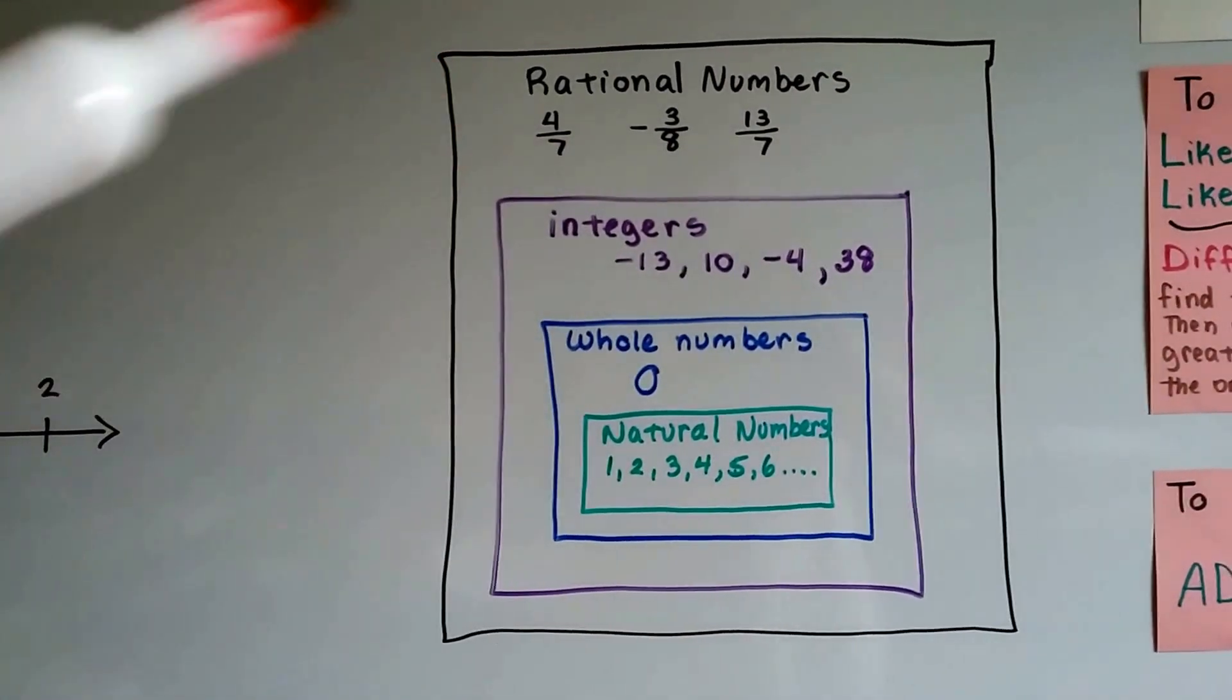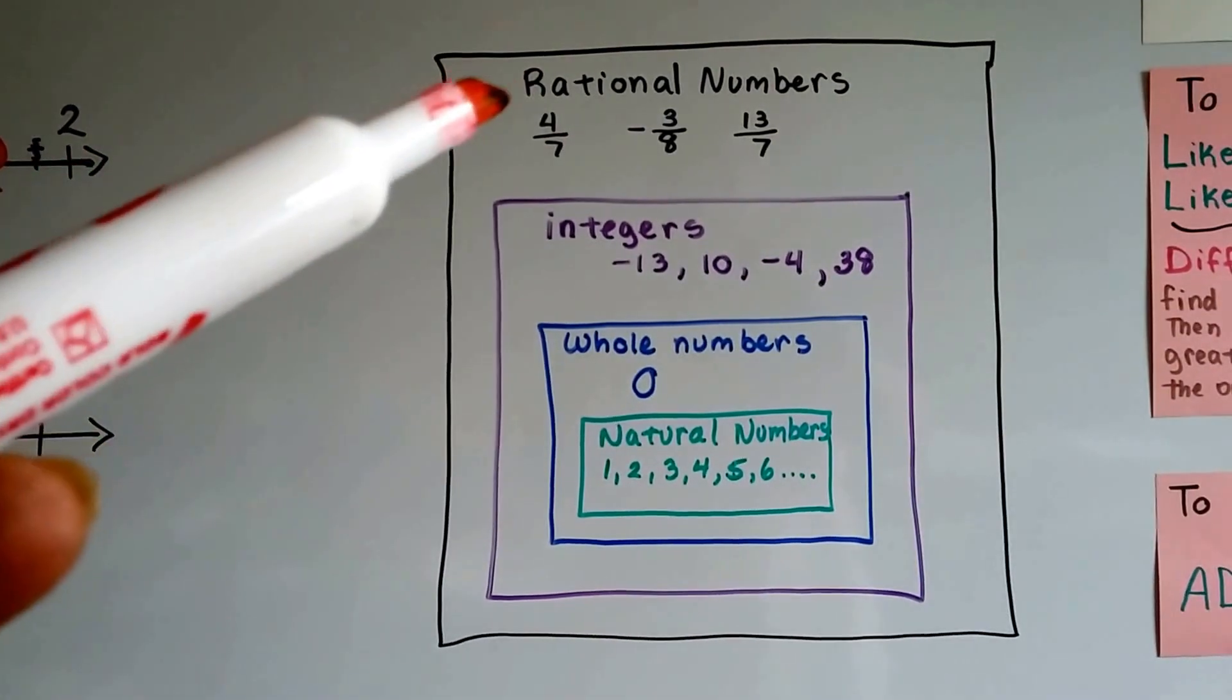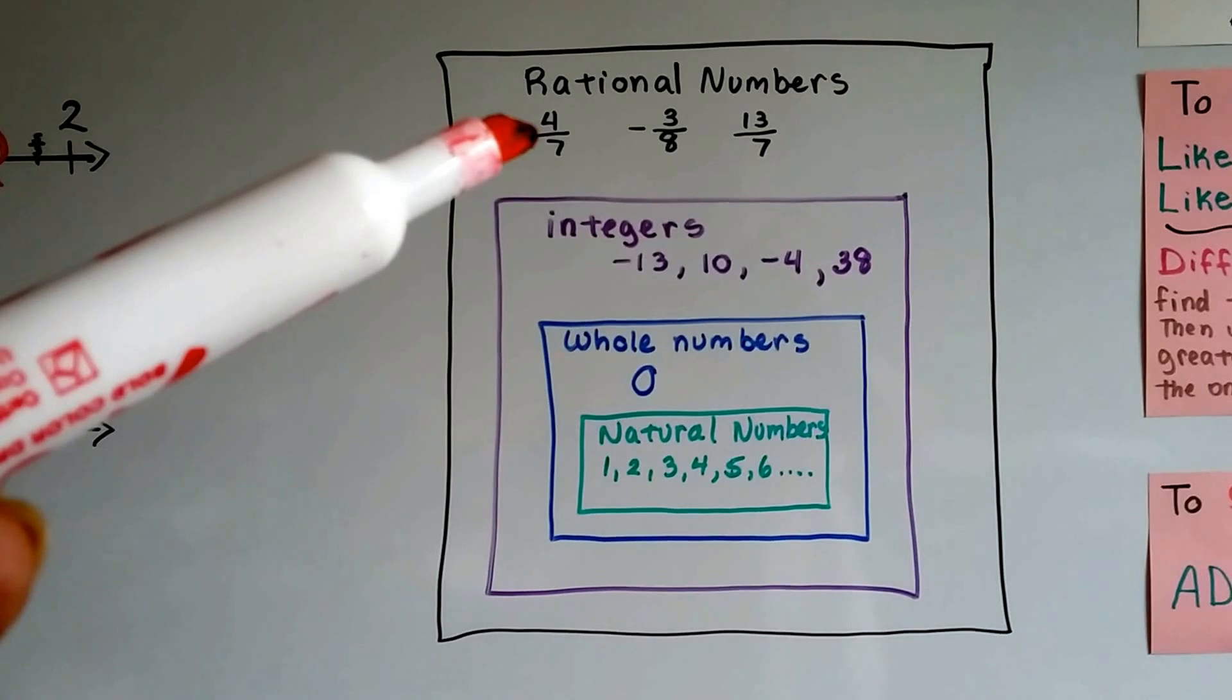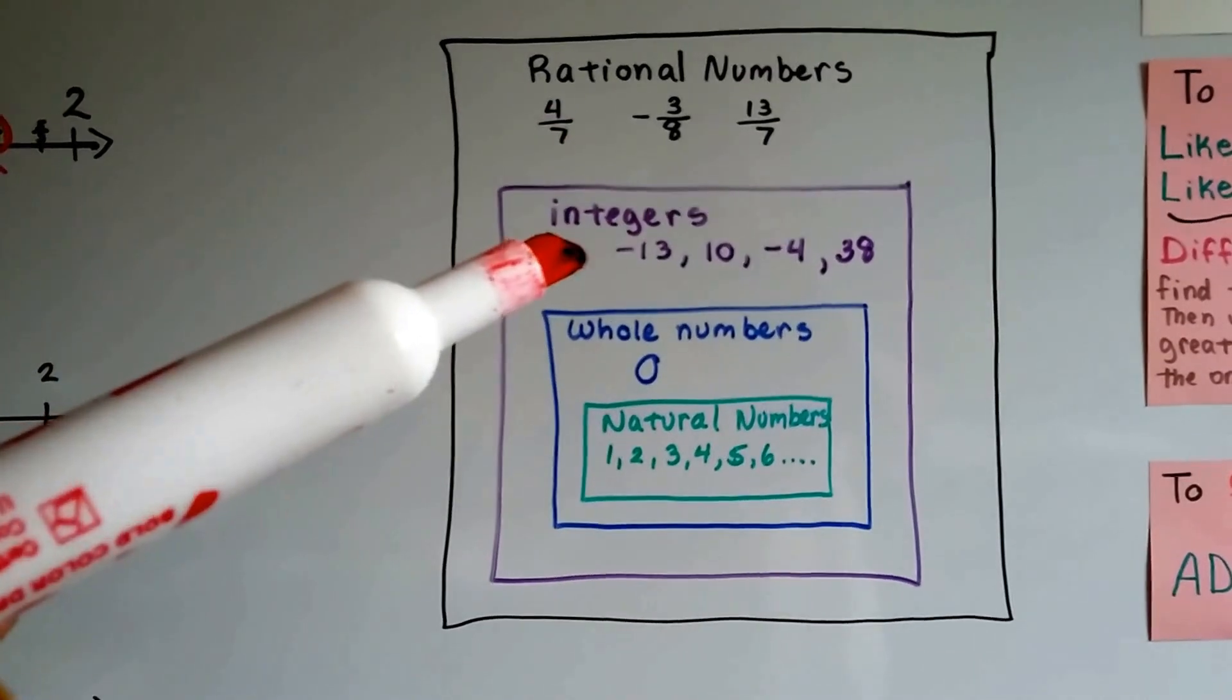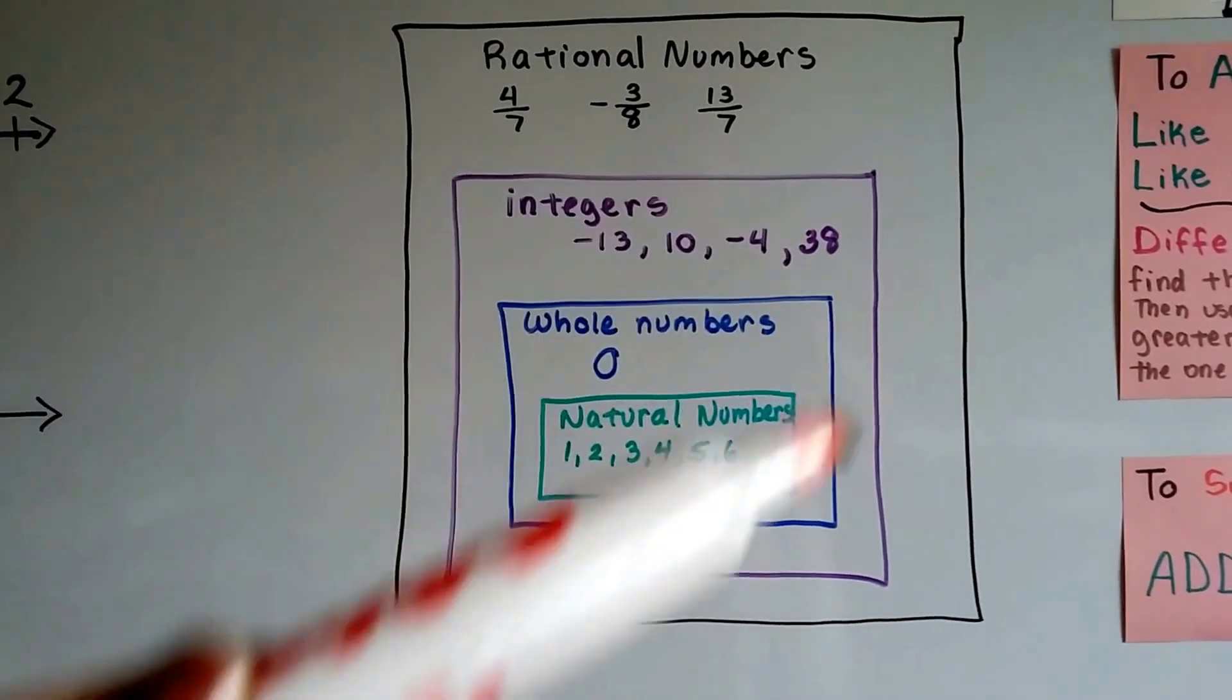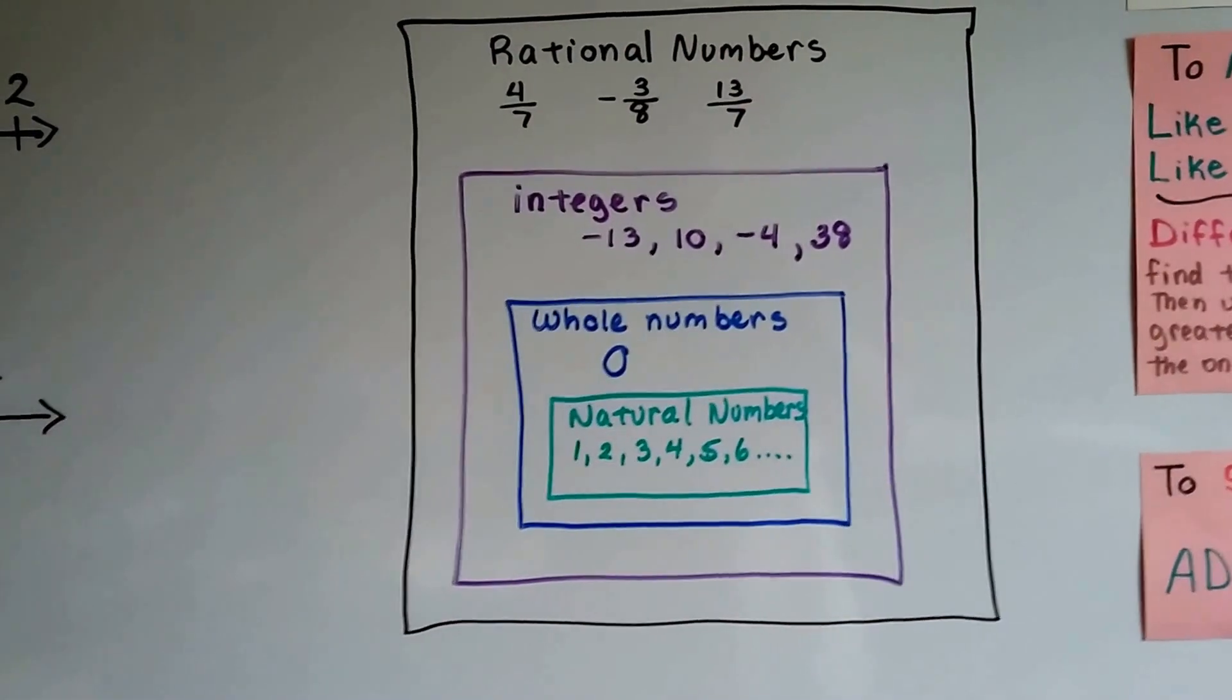Rational numbers are simple fractions, negative or positive. So rational numbers include integers, whole numbers, and natural numbers. They're all within rational numbers. So these are all rational.